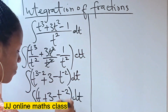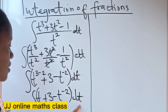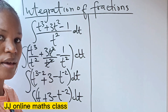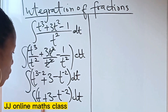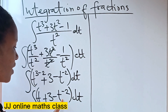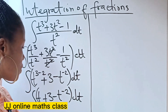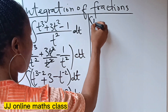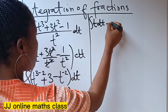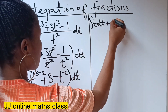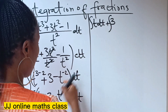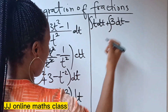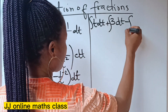From here, we need to separate these terms. Because we are going to integrate them separately as well. So it's going to be: integral of t dt, plus integral of 3 dt, minus integral of t to the power of minus 2.